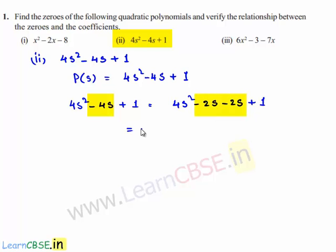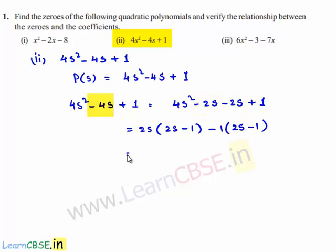This is equal to 2s times of (2s minus 1) minus 1 times of (2s minus 1). So we can take (2s minus 1) as common, and we will be getting (2s minus 1) times (2s minus 1).